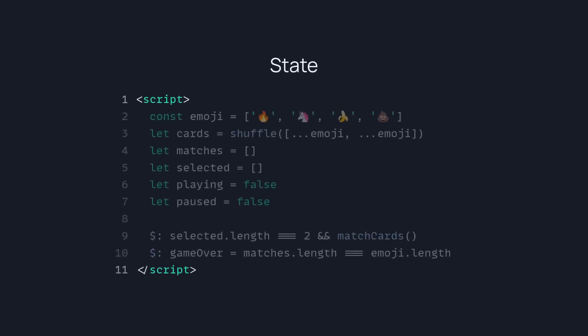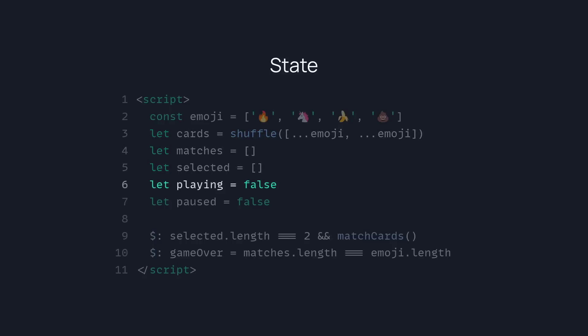So let's look at the state for our game. Here in Svelte, I'm going to have a script tag, I'm going to have emojis, I shuffle some cards, and I'm going to have matches, selected, playing, and paused. I'm also going to use some reactive variables — we're going to match the cards if the length is 2. Also to know if the game is over, we can check if the matches length is equal to the emojis length.